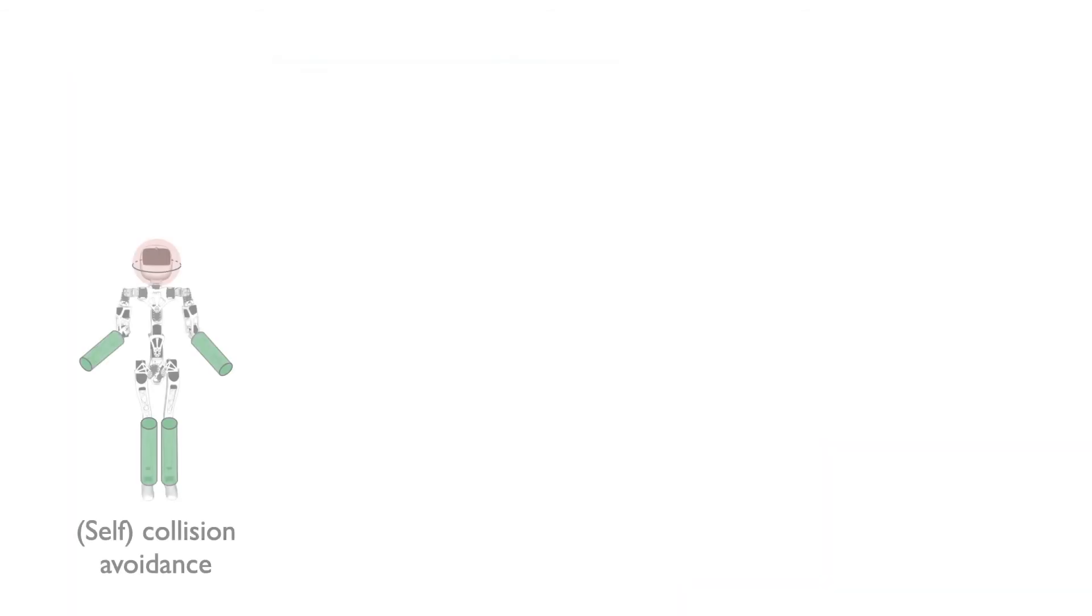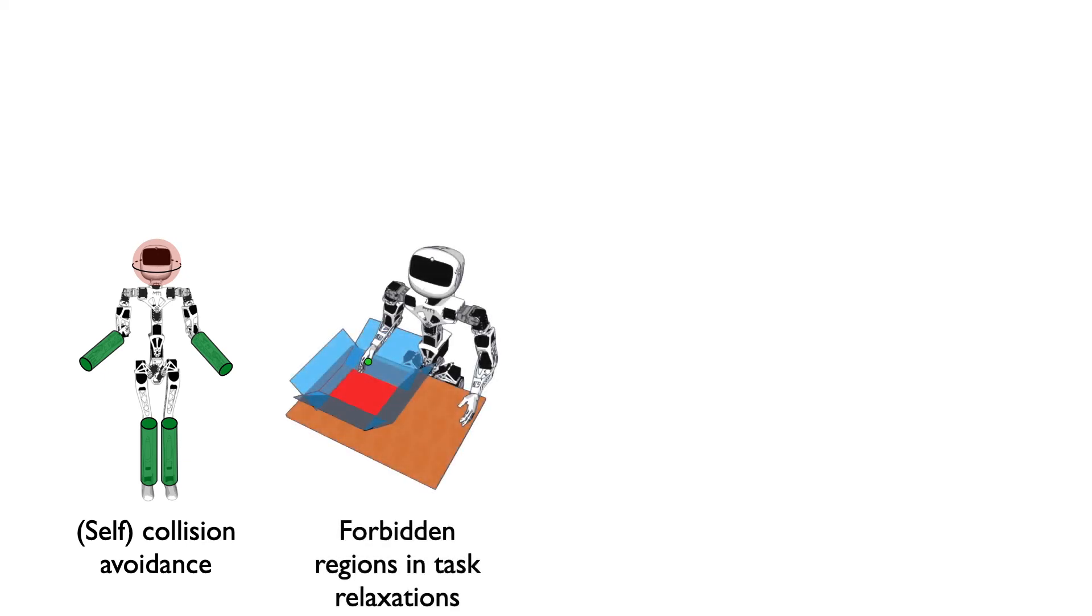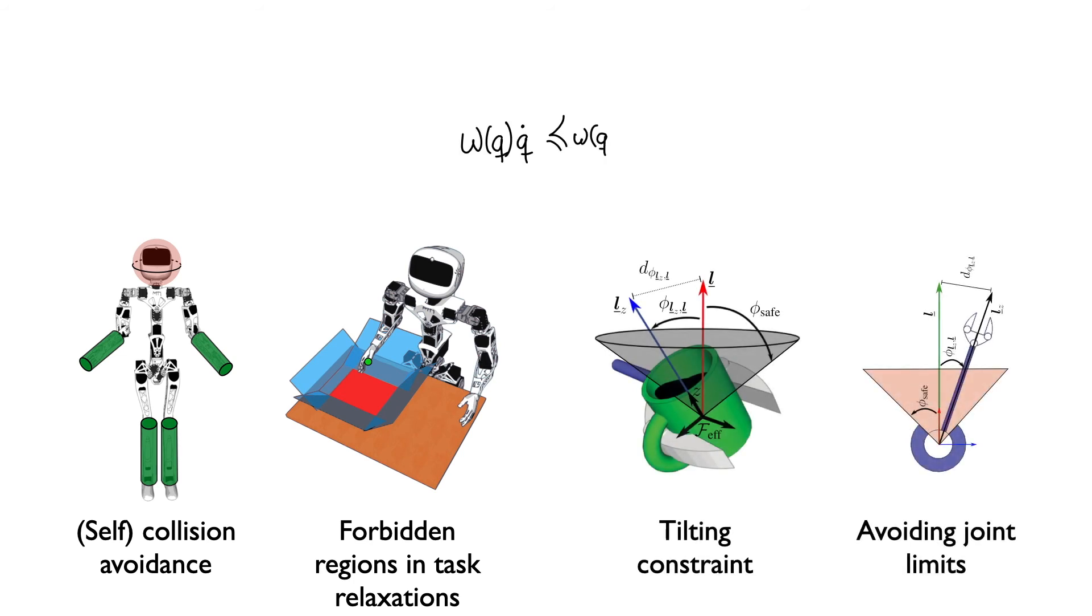We use those inequalities to perform collision and self-collision avoidance, define forbidden regions in task relaxations, enforce tilting constraints, and avoid joints limits. Those inequalities are found for different geometrical primitives within dual quaternion algebra, using simple primitives like the ones we saw at the beginning of this presentation.